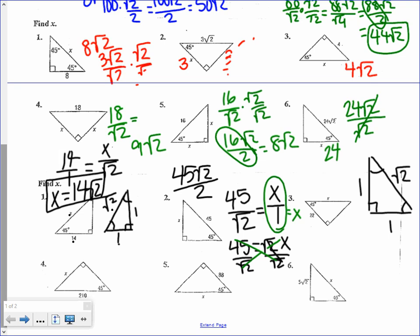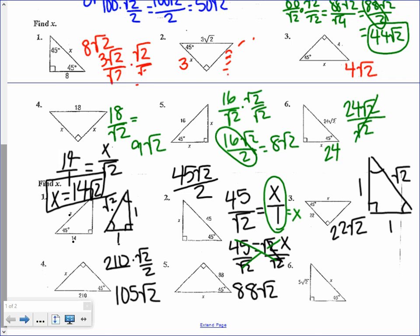For number 3, the side is 22 so the hypotenuse is 22√2. For number 4, the hypotenuse is 210, so multiply by √2 over 2 to get 210 divided by 2, which is 105√2. For number 5, multiply the leg 88 by √2 to get 88√2. For number 6, the leg is 5√2; multiplying by √2 gives 5 times √4, and √4 is 2, so the answer is 10. Pick whichever method you prefer to find your missing side.